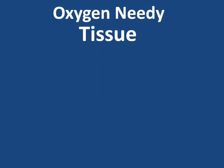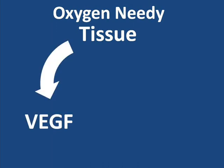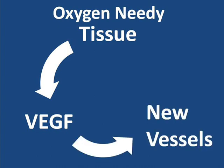So why do these vessels form? Normally, when tissues in the body become starved for oxygen, those tissues release chemicals which encourage the development of new blood vessels. One of the most important of these chemicals is a protein called vascular endothelial growth factor, abbreviated VEGF and pronounced VEGF. These chemicals stimulate the sprouting and growth of new blood vessels from existing nearby blood vessels, and these new blood vessels bring an alternative source of blood to the oxygen-needy tissue. This normal process is called angiogenesis.